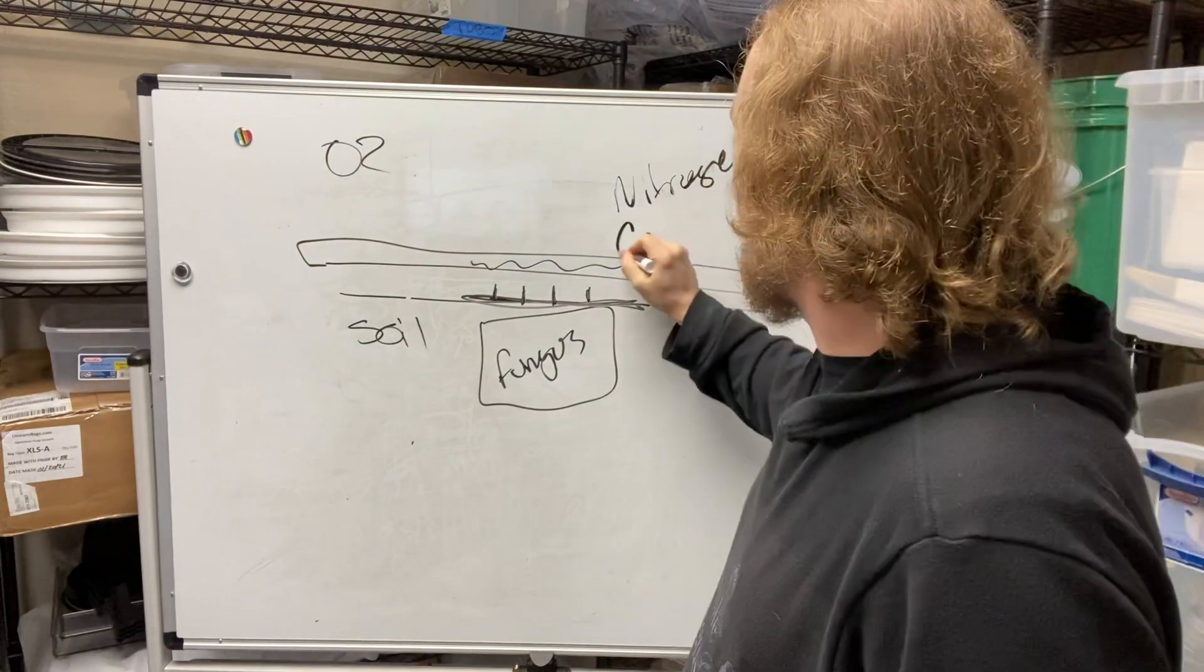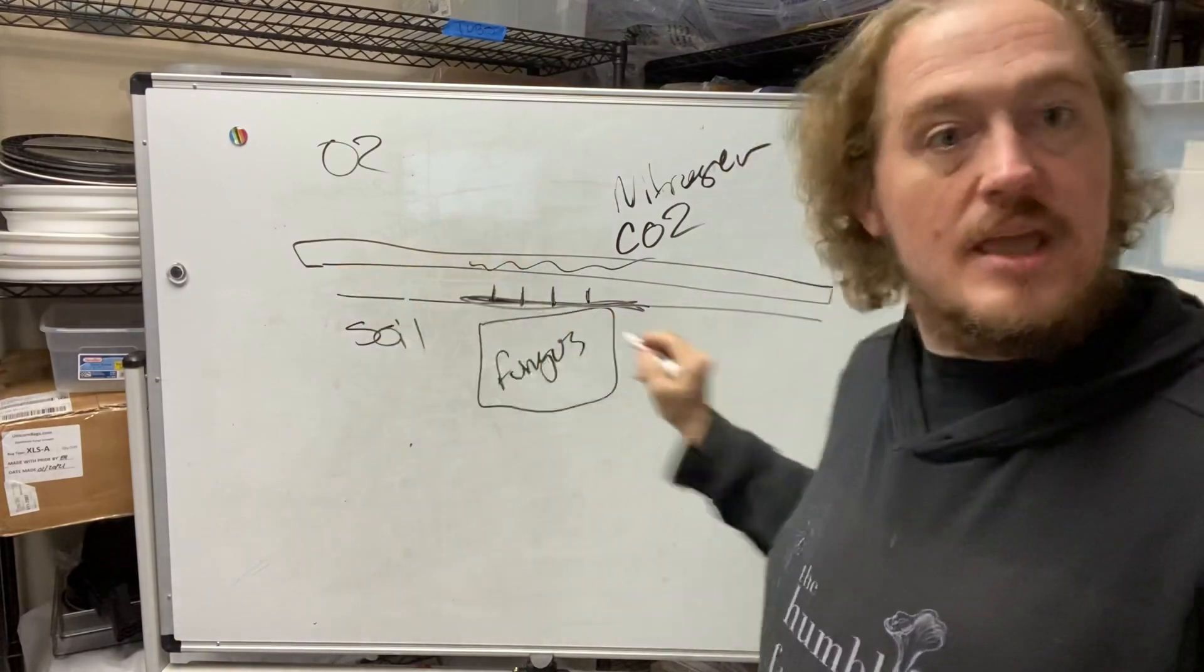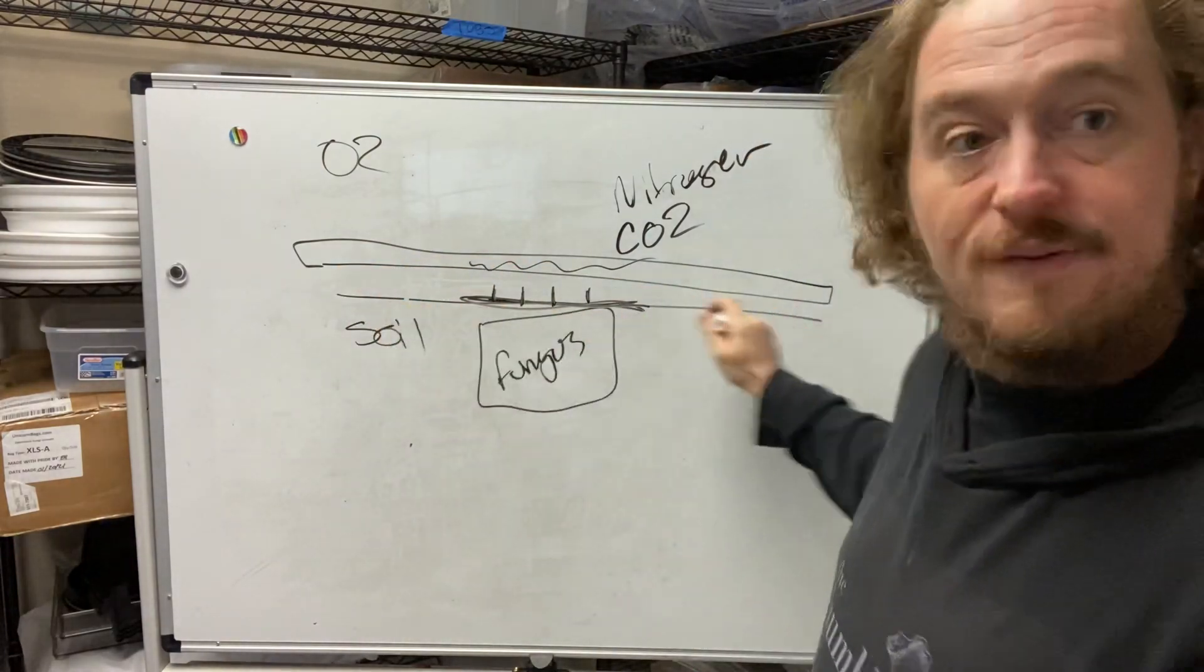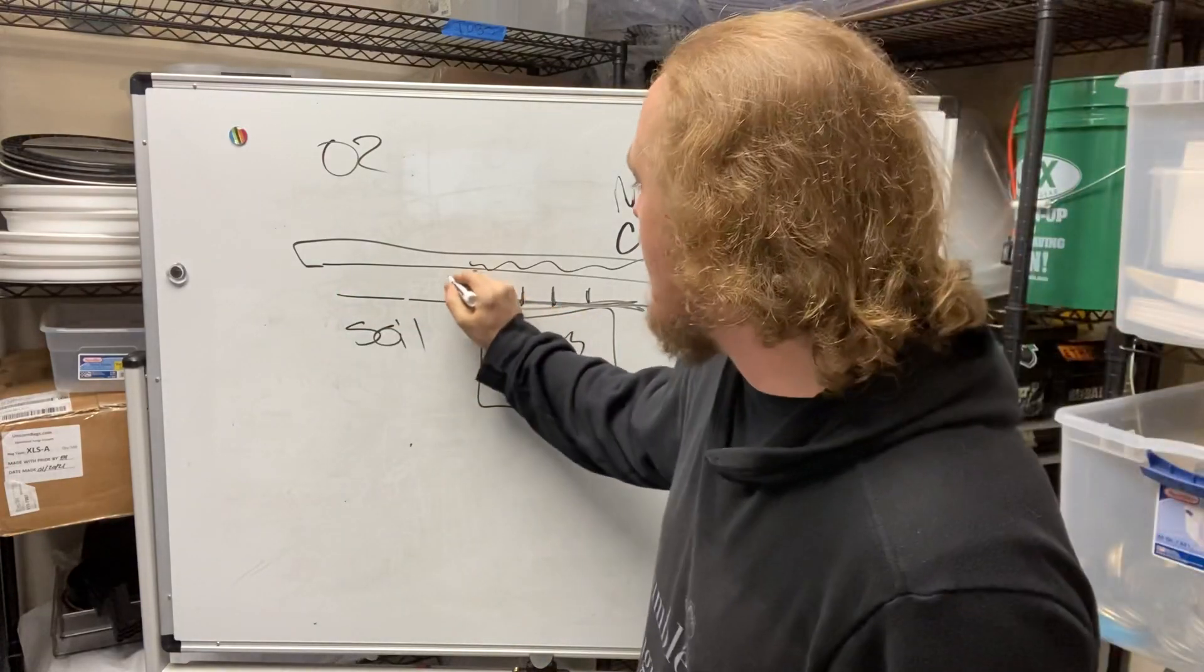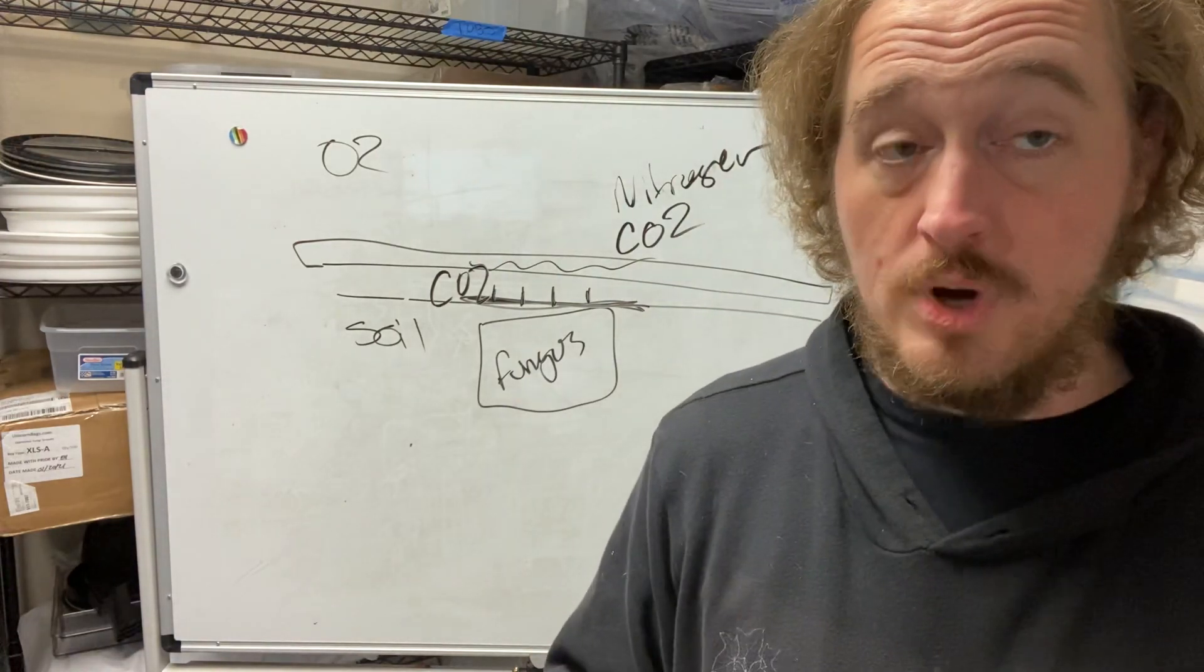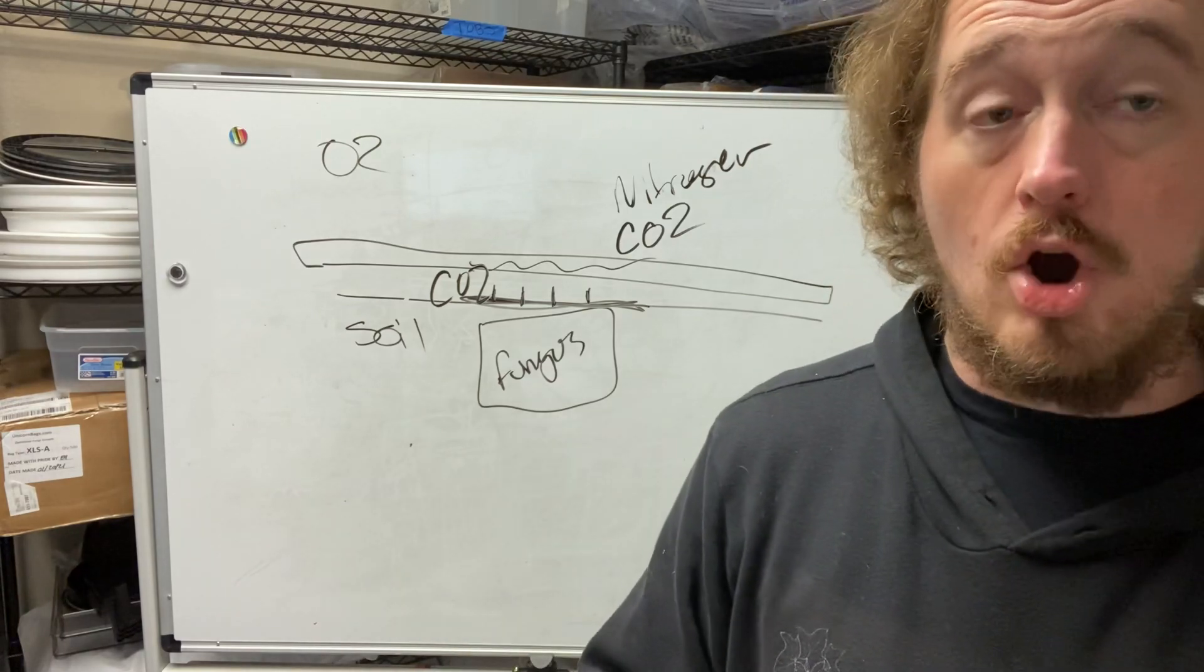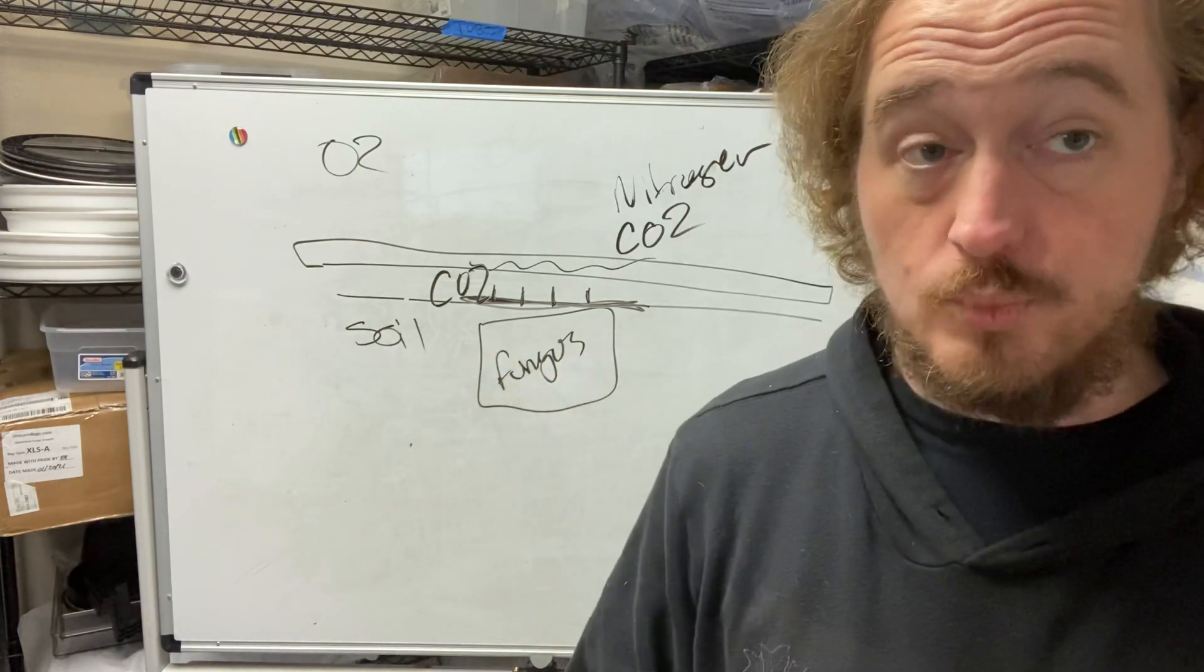Number two, it is extremely high in carbon dioxide because as these decay, they actually emit carbon dioxide and everything else like that. As the fungus is working, it is emitting carbon dioxide. So everything in this pinning environment is extremely high CO2. So what did we learn? High CO2 environments are where fungi really enjoy putting out pins, baby mushrooms.